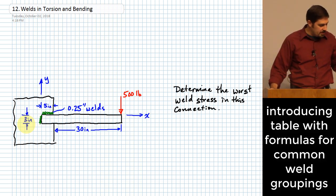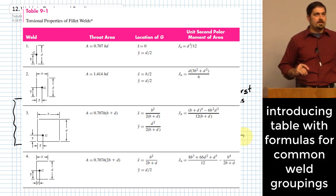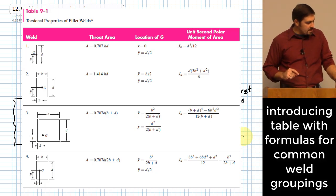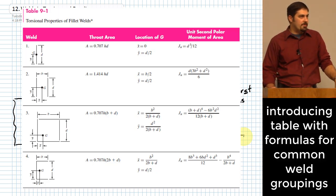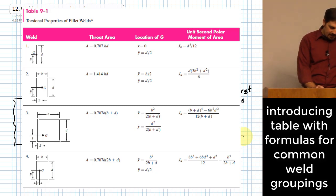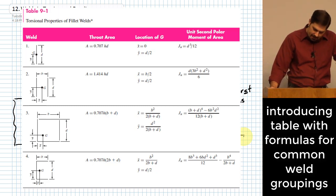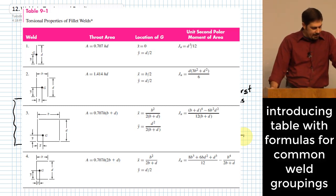With these types of problems, we are going to rely a good bit on a table of information in the book. That's where I want to start — by showing you Table 9-1. If you have your book, I would recommend you flip and look at Table 9-1. You see several different shapes of weld groups given in that table. On the previous discussions in the text, they show you how they arrive at some of these expressions, and we're going to use the information in this table a decent amount.